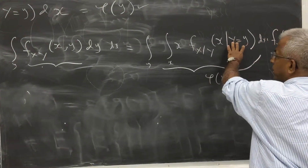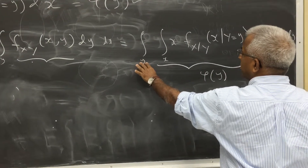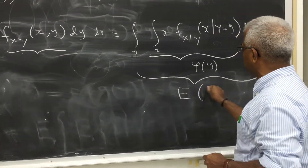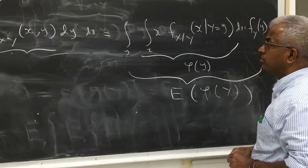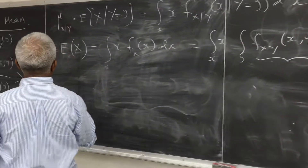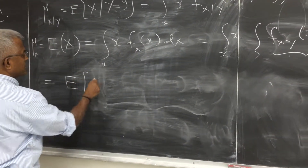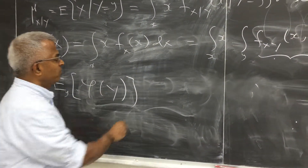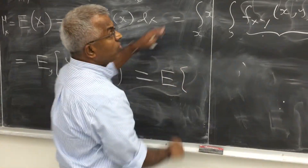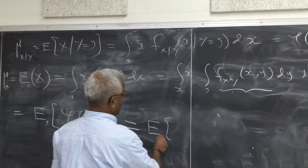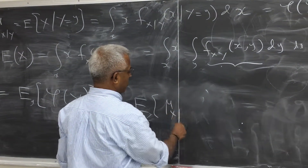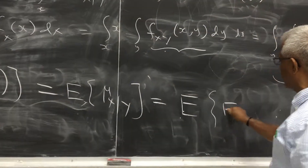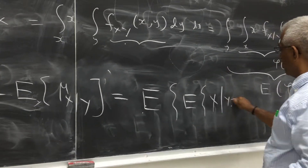This is your phi(Y) — the conditional mean of X given Y. So what we are doing is taking the expected value of the conditional mean with respect to Y. This whole integral is now the expected value of phi(Y), which is the expected value of the conditional mean of X given Y, equal to y.